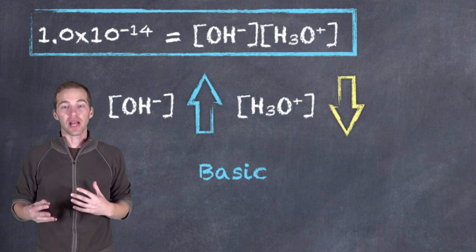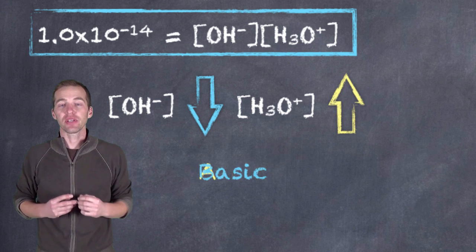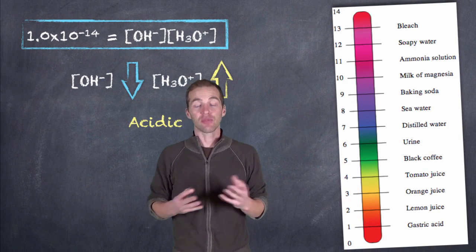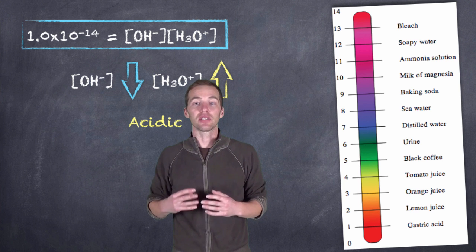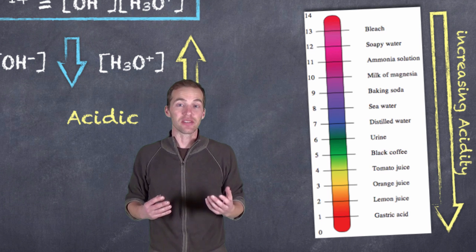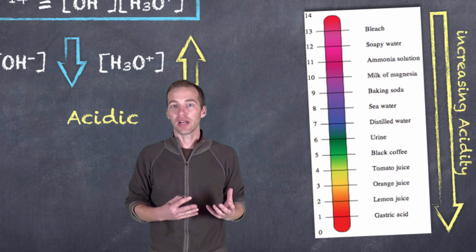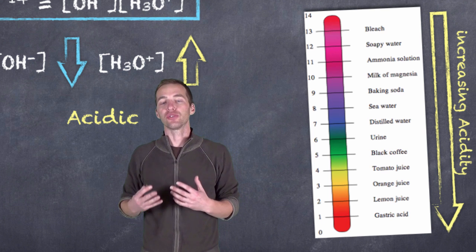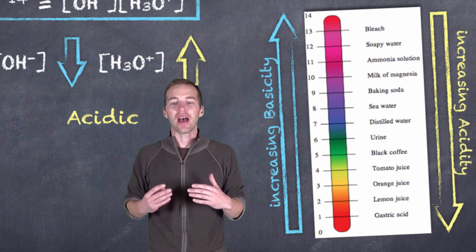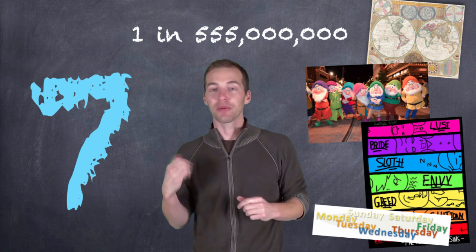If the hydronium or hydrogen ion concentration is greater than the hydroxide ion concentration, we have an acidic solution. The pH scale doesn't simply tell us whether something is acidic or basic — it gives us an indication of the relative acidity or basicity of a solution. Going down the pH scale means decreasing basicity and increasing acidity, as hydronium ion concentration exceeds hydroxide. Going up the pH scale means increasing basicity because hydroxide ion concentration exceeds hydronium.